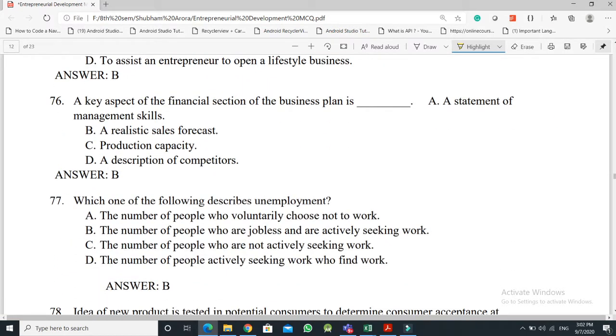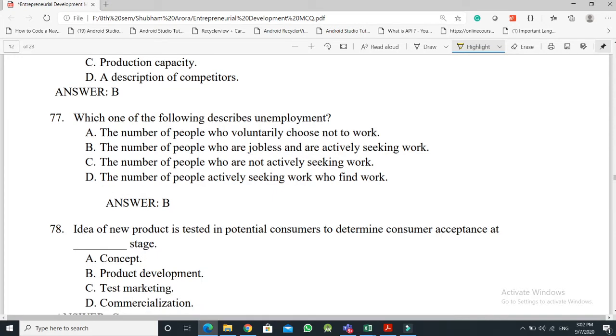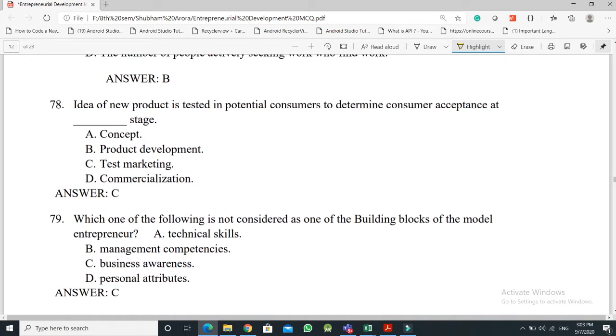Question No. 76: A key aspect of the financial section of business plan is - the answer is Option B, A Realistic Sales Forecast. Question No. 77: Which one of the following describes unemployment - the answer is Option B, the number of people who are jobless and are actively seeking work. Question No. 78: Idea of a new product is tested in potential consumers to determine consumer acceptance at which stage - the answer is Option C, Test Marketing.